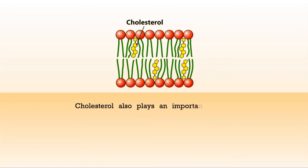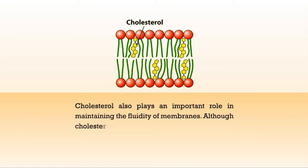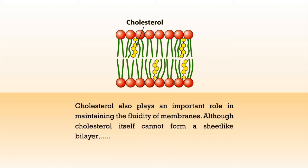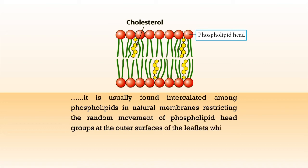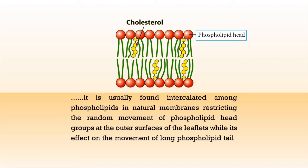Cholesterol also plays an important role in maintaining the fluidity of membranes. Although cholesterol itself cannot form a sheet-like bilayer, it is usually found intercalated among phospholipids in natural membranes, restricting the random movement of phospholipid head groups at the outer surfaces of the leaflets, while its effect on the movement of long phospholipid tails depends on the concentration of cholesterol. At usual concentrations of cholesterol, the steroid ring interacts with the long hydrophobic tails of phospholipids, immobilizing the lipids and leading to a decrease in biomembrane fluidity. However, when the concentration of cholesterol is lower, the steroid ring separates and disperses the phospholipid tails, leading to an increase in biomembrane fluidity.